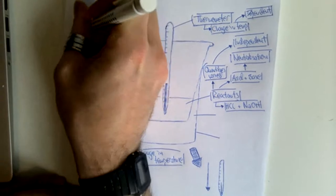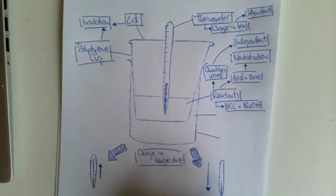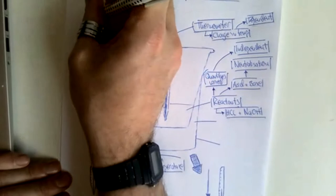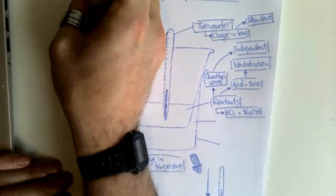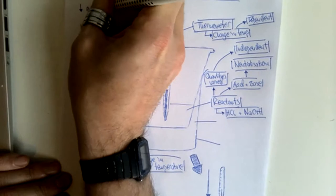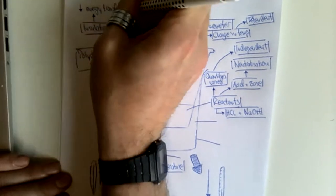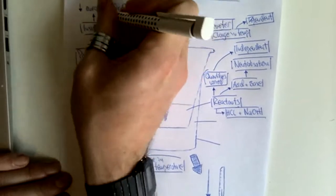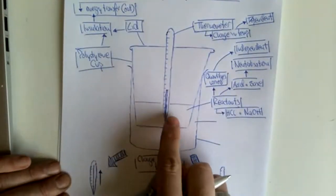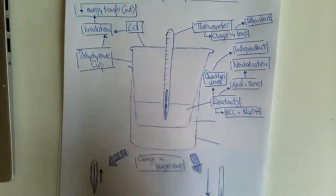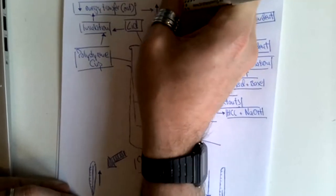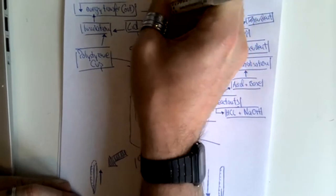The purpose of insulating the reactants is to reduce the rate of energy transfer out of the cup, because you want as much energy from the reaction to be contained inside so you can get a more accurate reading of the change in temperature. The purpose of the insulation is to try and increase the accuracy of the temperature change measurement.